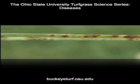On higher cut turf, leaf lesions are apparent, which is not always the case on shortcut turf. The lesions initially start small but increase in size, varying in both shape and size. The lesions range in color from tan to a dark brown.